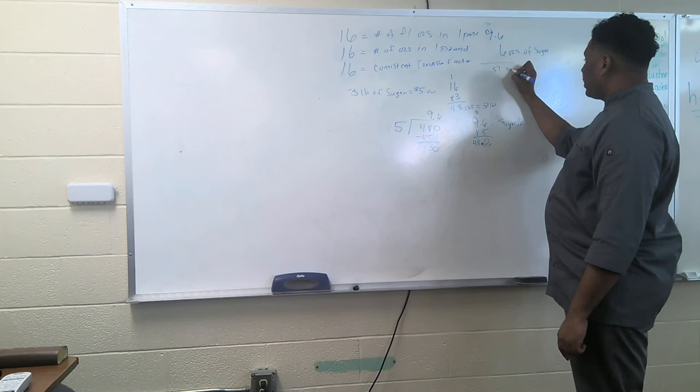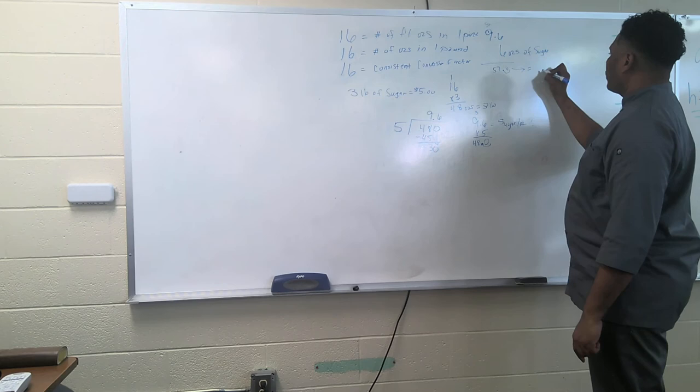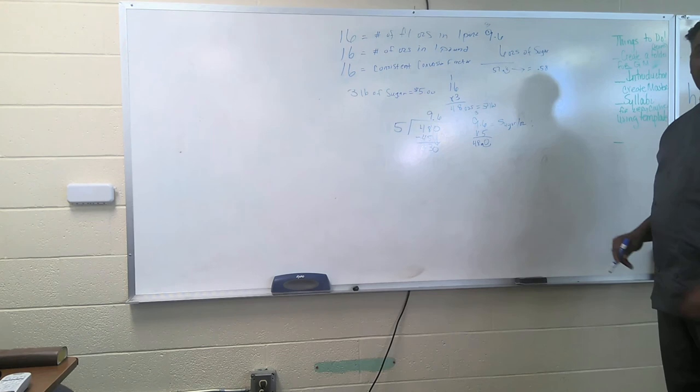We have one number to the right of the decimal. We will reciprocate here: 57.6. And then we're going to round to the nearest whole number expressed in cents. So the answer would be 58 cents would be the cost of the sugar in this particular recipe.